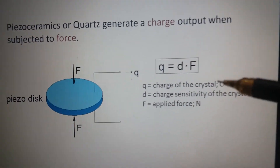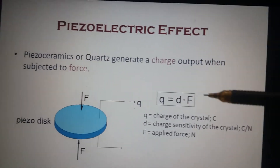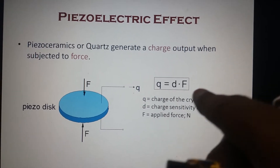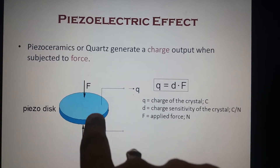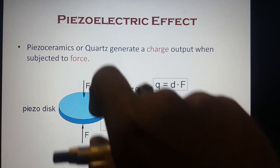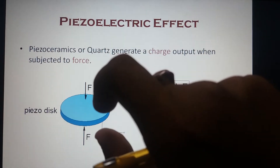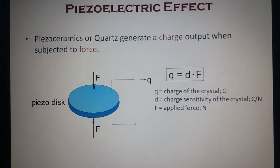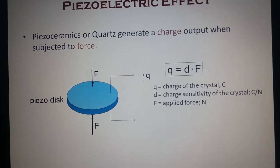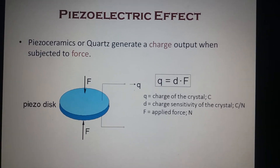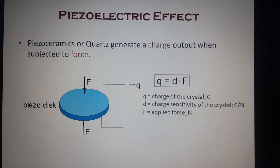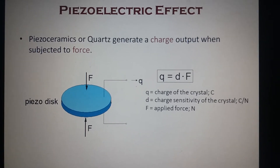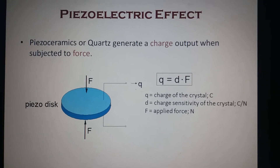F is the applied force, whose SI unit is newton. The expression is derived from the proportionality: Q is proportional to F, because the more force you apply across the piezoelectric material, the more charge is generated across its surface. Adding the proportionality constant d gives Q = d × F, which is the mathematical expression for the piezoelectric effect.